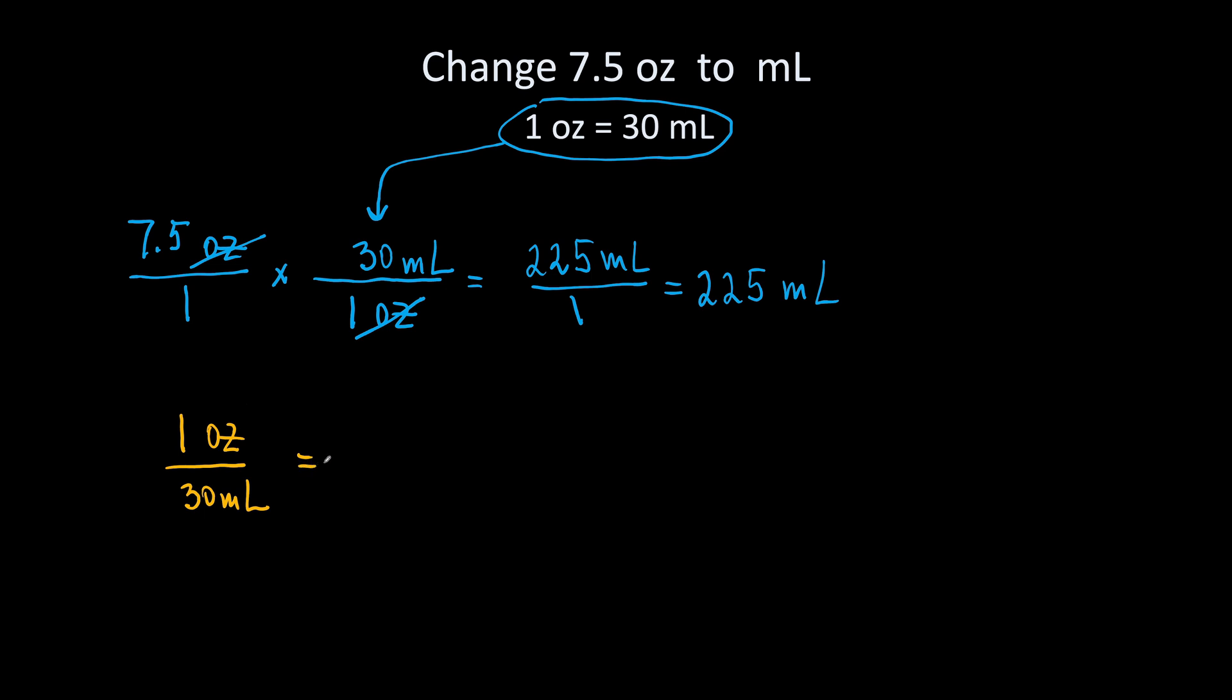Is equal to, look here, we have ounces on top, milliliters on the bottom. So we will stay consistent. We will put 7.5 ounces on top and x milliliters on the bottom. So we set up a proportion.